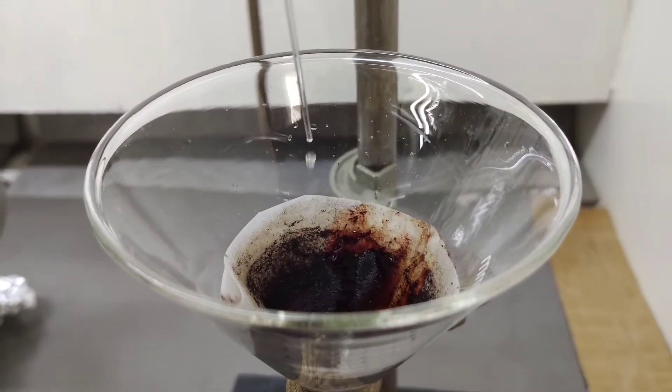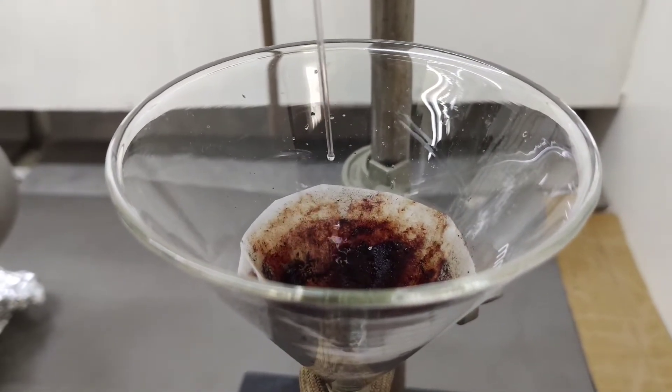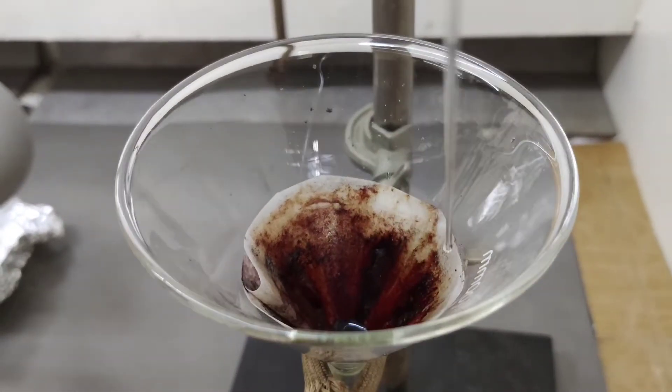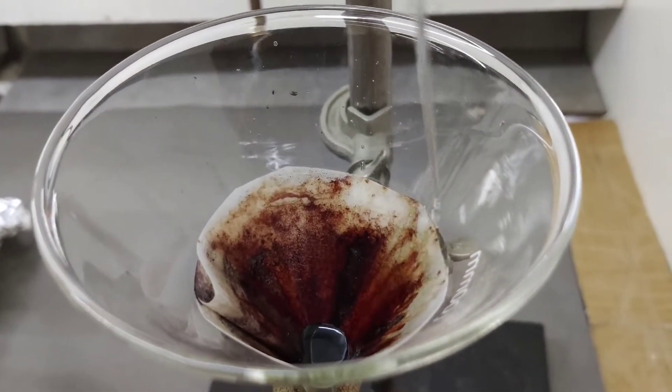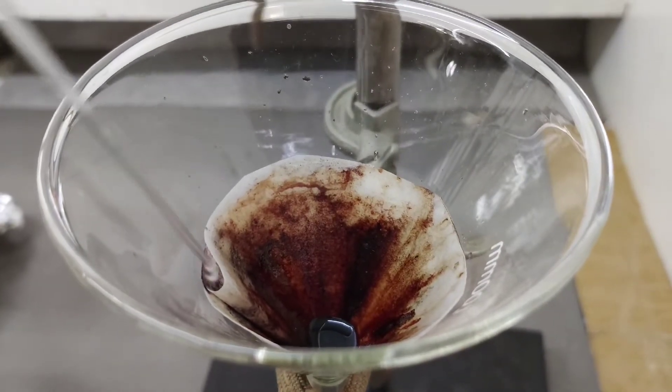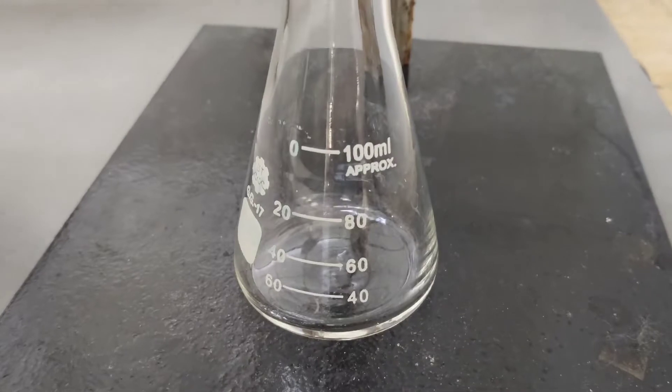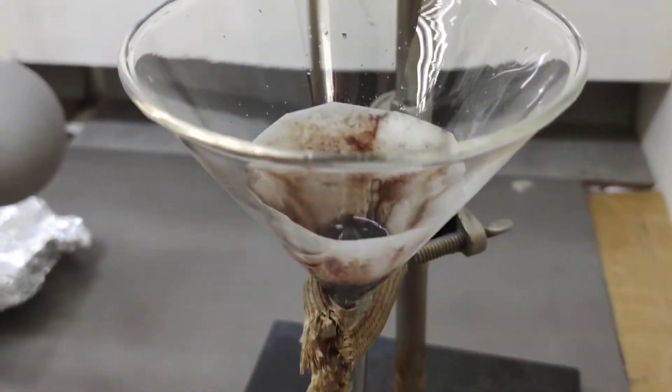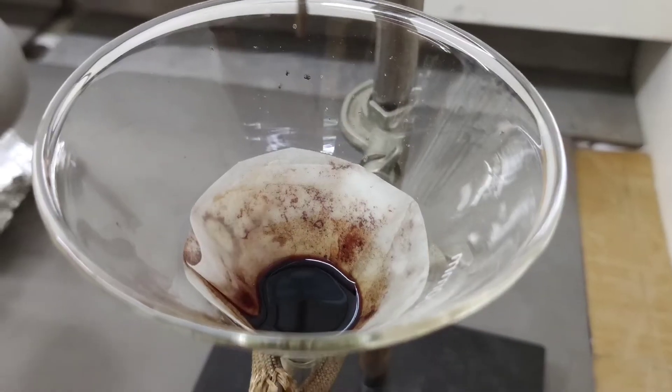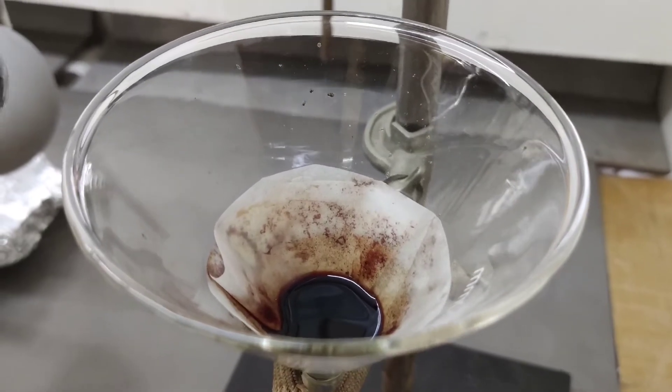We see here that the DCM dissolves the corrole but the solution doesn't go through the filter paper because the filter paper is still wet with water. So we are going to use a little bit of methanol to help dissolve the water into the DCM.